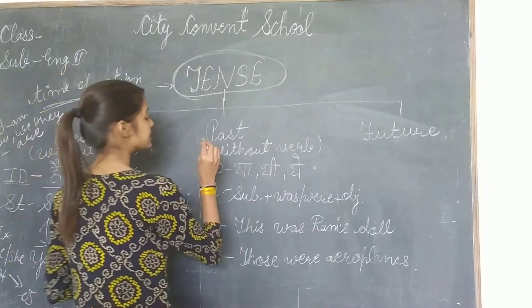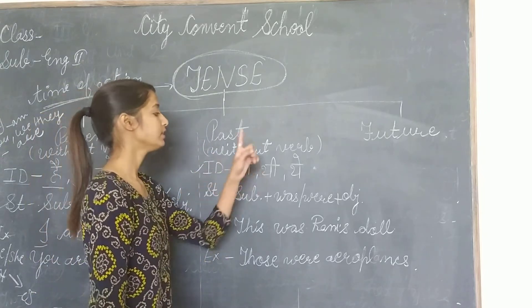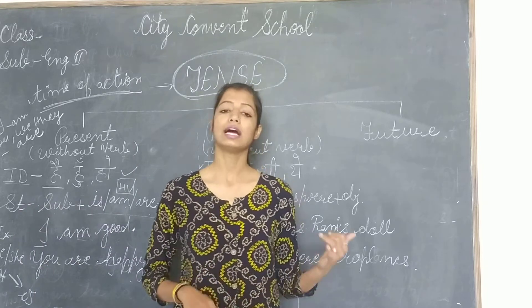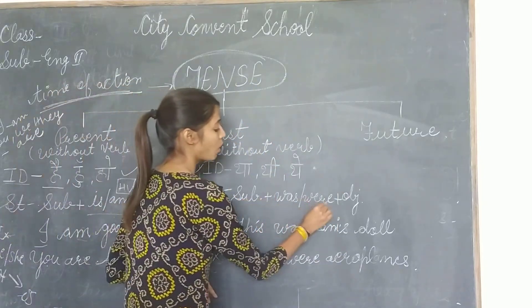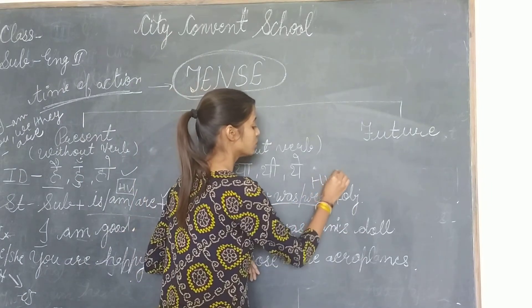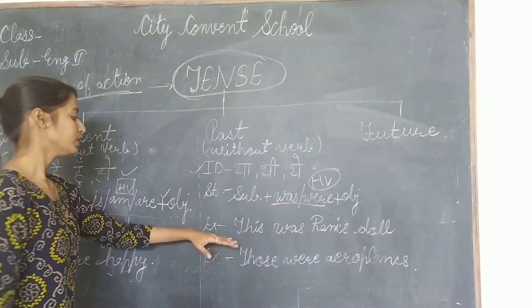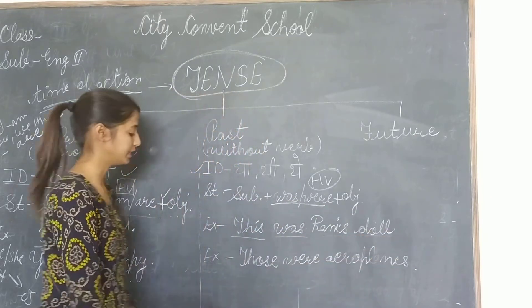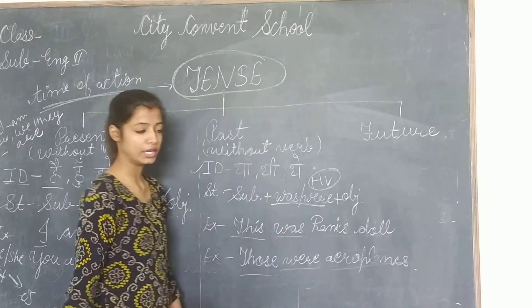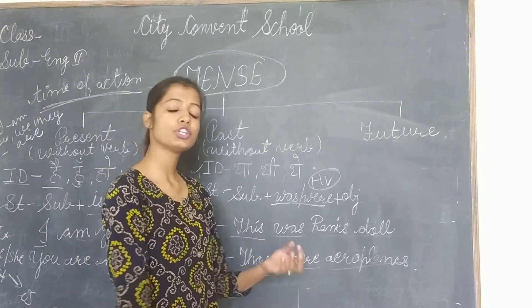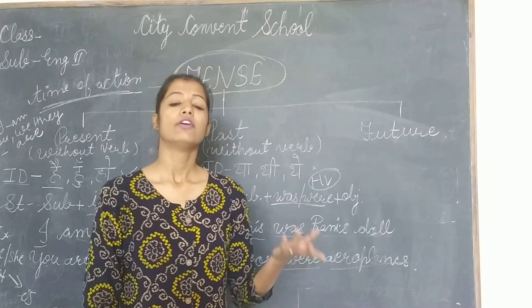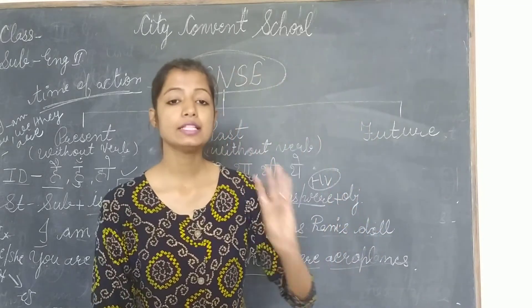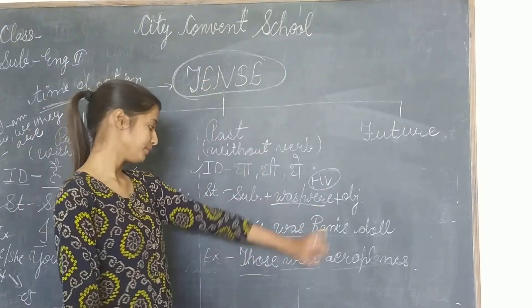Ab past tense without verb. Iski jo ID hai woh hai — tha, thi, the. Structure: Subject + was/were + Object. Yahan kaunsi helping verbs aa rahi hain? Was aur were. Jaise: This was Rani's role — yeh aapka subject hai, 'was' boss helping verb hai, 'Rani's role' aapka object hai. He, she, it, this ke saath 'was' lagta hai. You, we, they, those, these ke saath 'were' lagta hai.